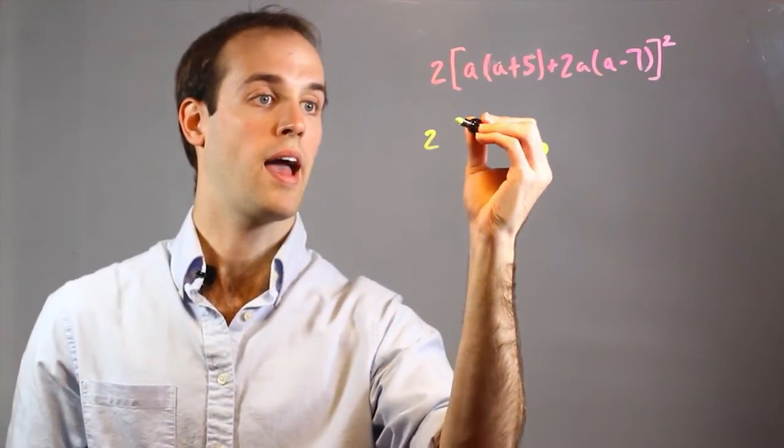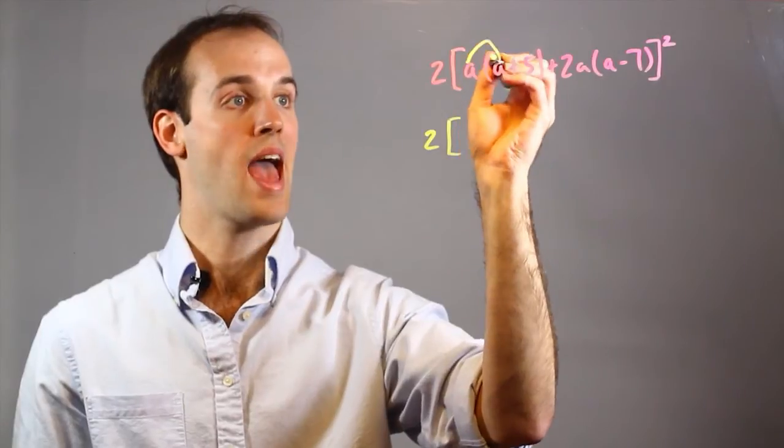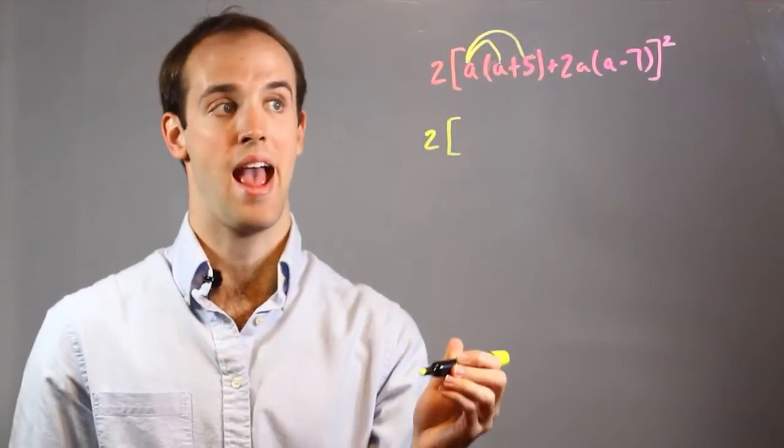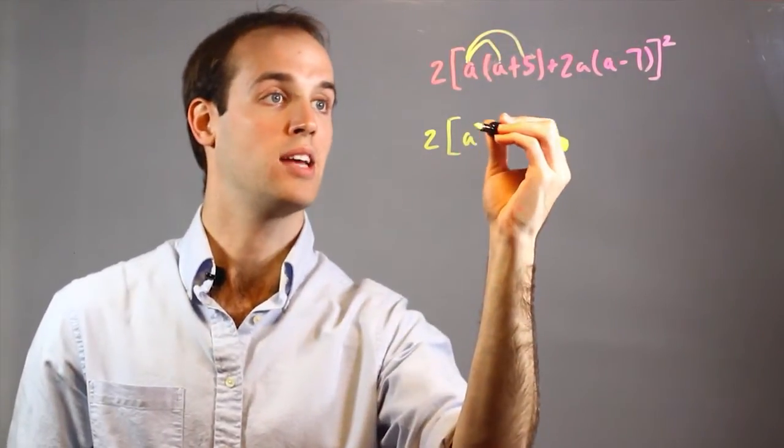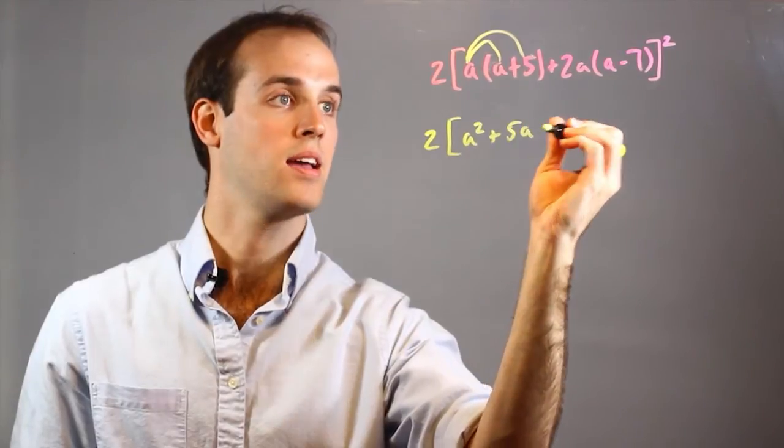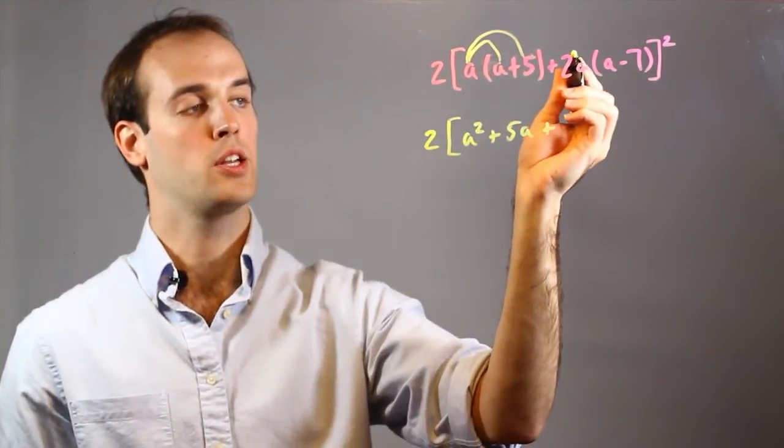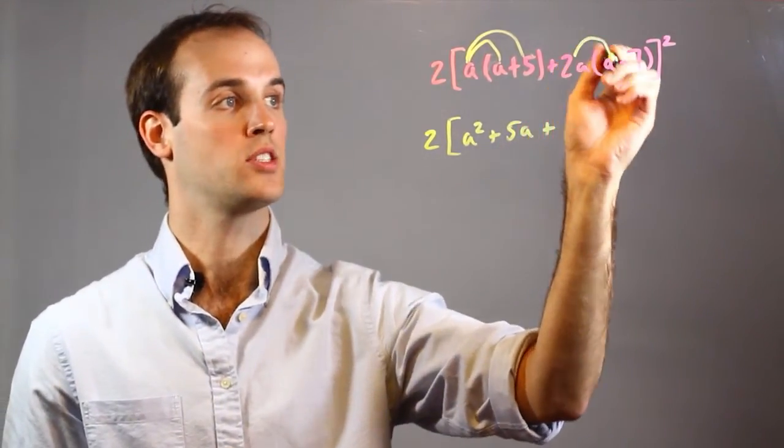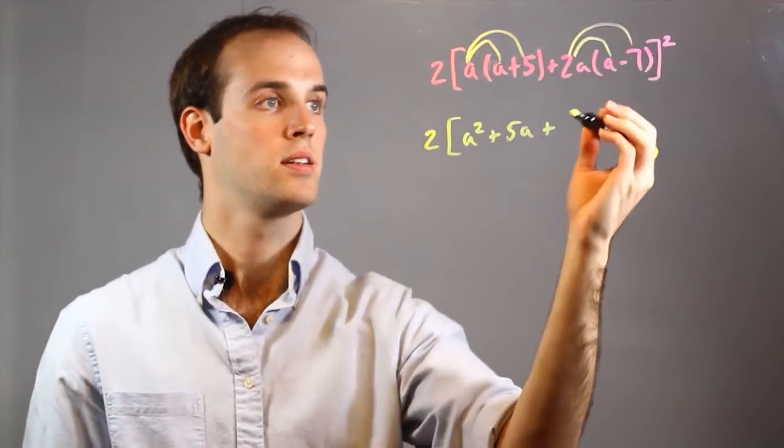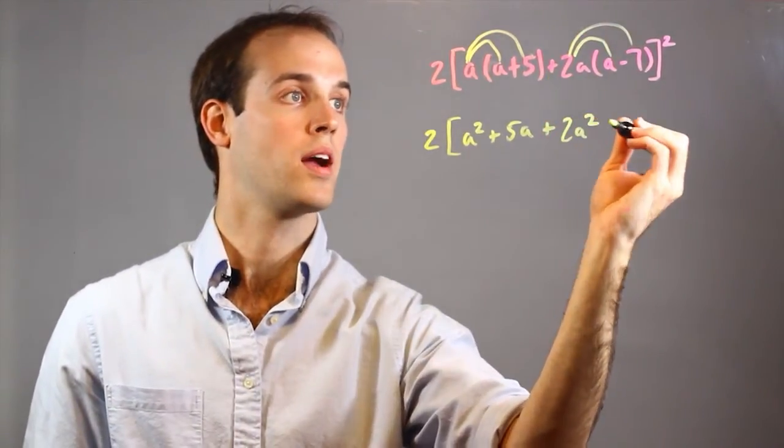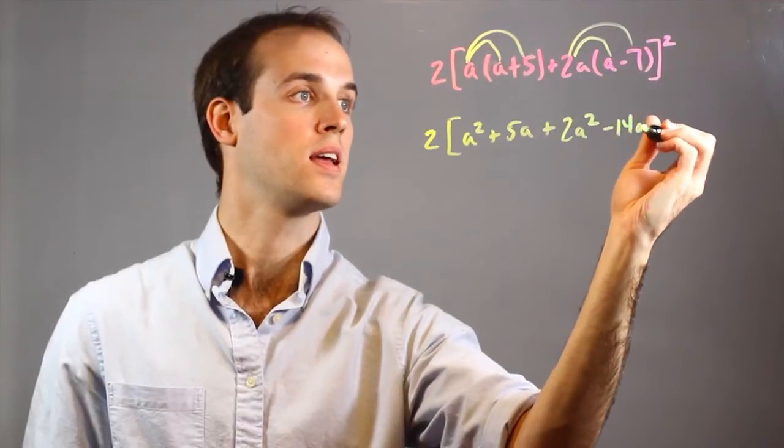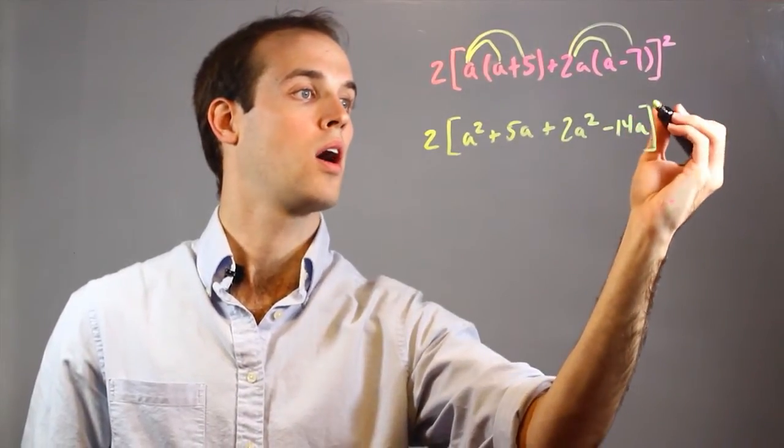So I have 2[, then I want to distribute this A to both the A and the 5, which will give me A² + 5A. And then I'm going to do the same thing over here. I want to distribute this 2A to this A and this -7, plus 2A² - 14A, all squared.